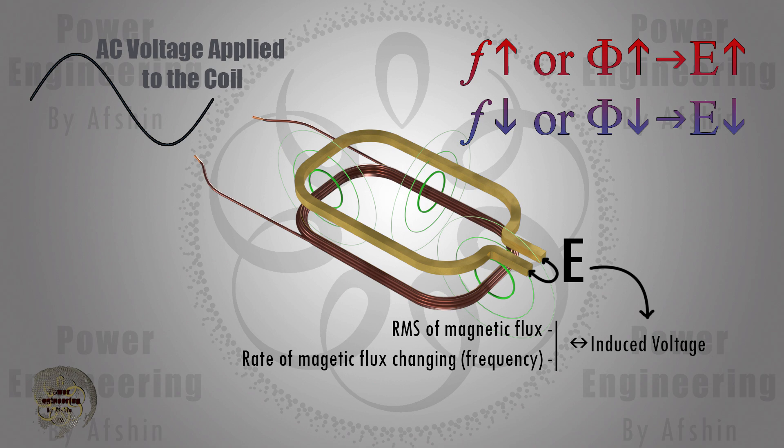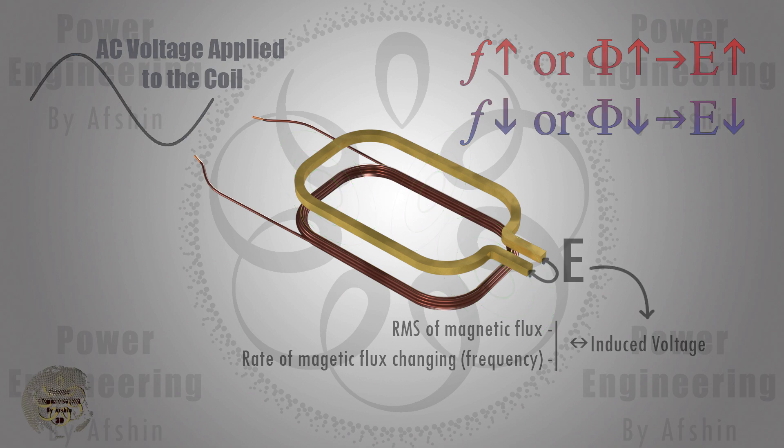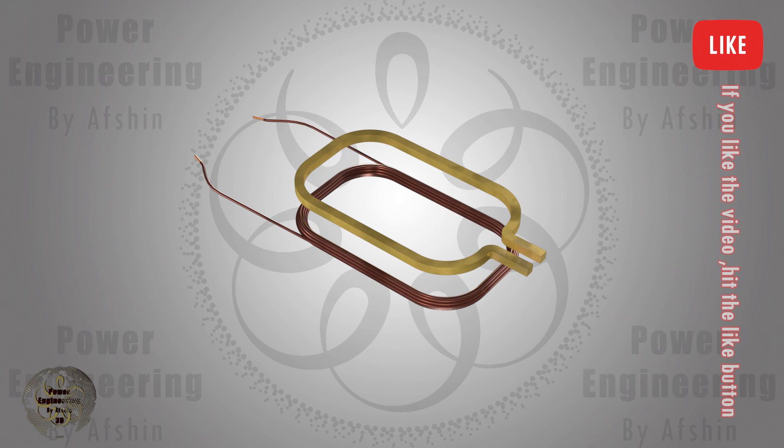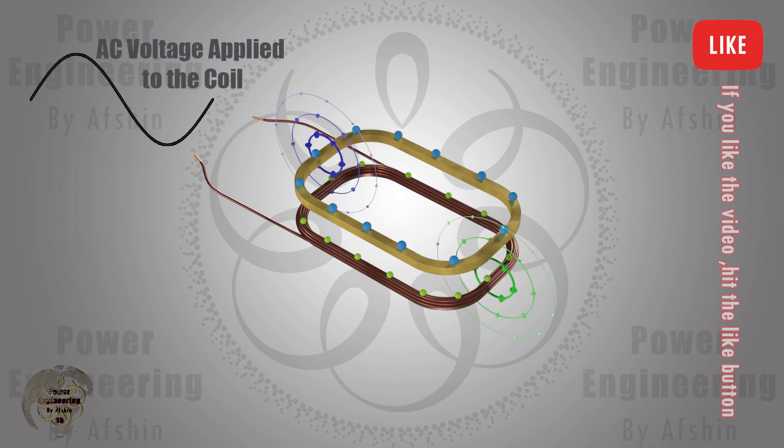If we increase the frequency or the input voltage, a higher voltage will be induced. Now, if we close this loop, a current flows through it depending on the induced voltage.